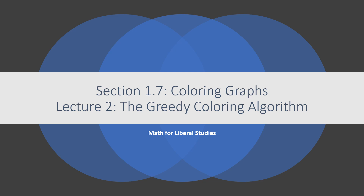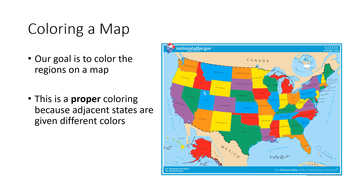This is the second video for section 1.7 on coloring graphs. In this video, I'll talk about the greedy coloring algorithm. The general problem we're trying to solve is to color the regions on a map. We call this a proper coloring because two states that share a border are given different colors — if any two regions on our map share a border, we don't want those to be the same color.